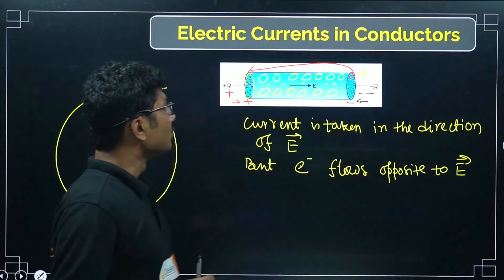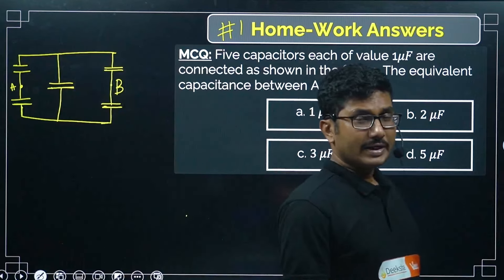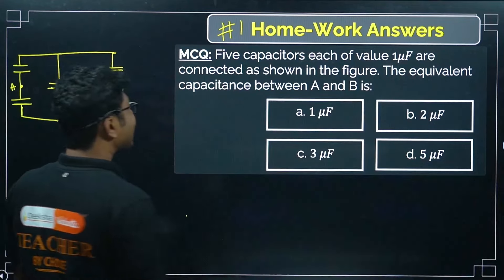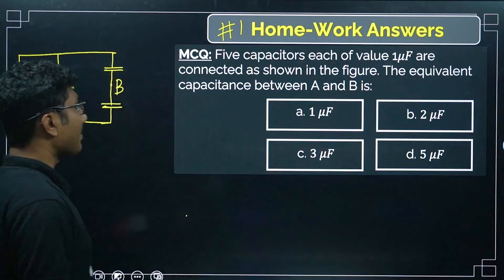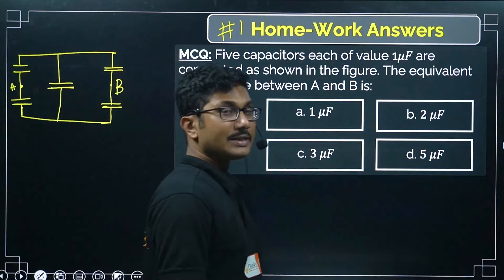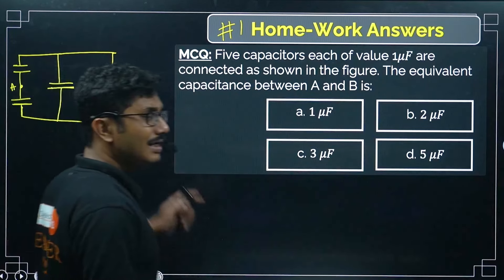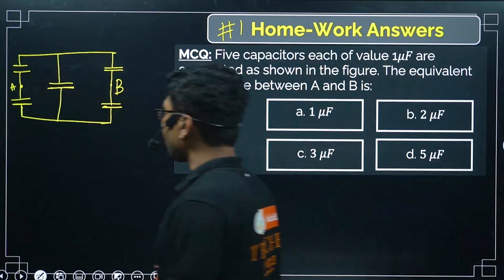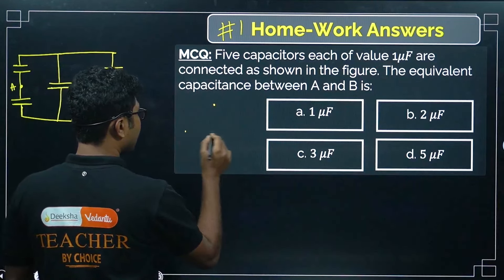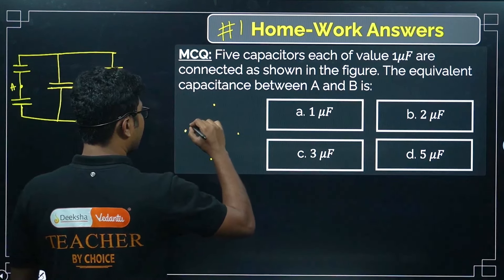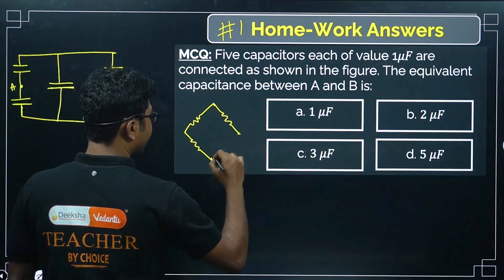Now let's review the homework problem from the last lecture: five capacitors each of 1 microfarad connected as shown — find the equivalent capacitance between A and B. Some of you answered incorrectly. This is a special connection similar to a Wheatstone bridge, which we will study in Part 3 of this chapter. In a Wheatstone bridge, if R1/R2 = R3/R4, the current through the galvanometer is zero and you can remove it.